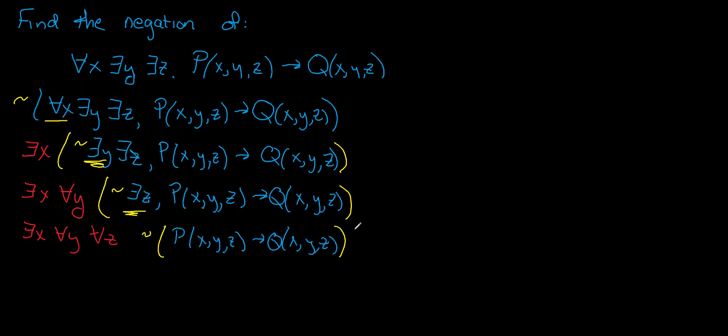So now we're down to the last task. And this last task is basically finding the negation of an if-then statement. So recall that the negation of p implies q is equivalent to p and not q.